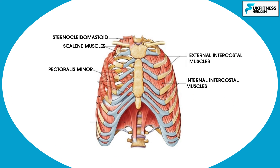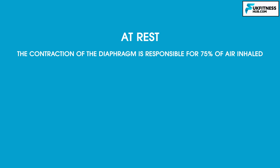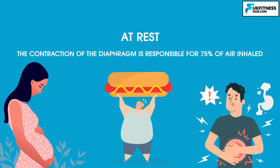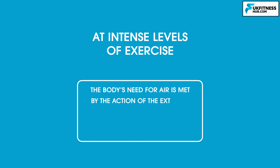The intercostal muscles are responsible for chest breathing, along with other skeletal muscles which become active when breathing deepens. The pectoralis minor, sternocleidomastoid, and scalene muscles act to elevate the ribs and sternum. At rest and at low levels of activity, the contraction of the diaphragm is responsible for 75% of air inhaled. However, the action of the diaphragm can be impeded if a person is pregnant, obese, or has eaten a heavy meal. At intense levels of exercise, the body's need for air is met by the action of the external intercostal muscles and associated muscles that move the ribs.